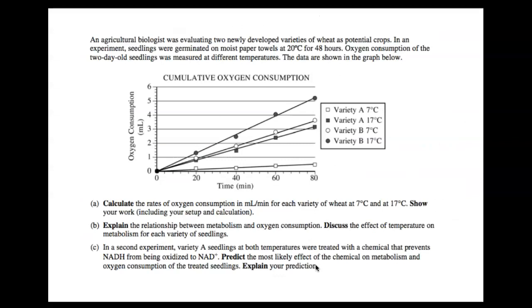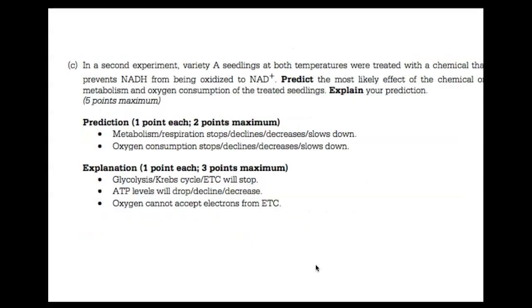And so then Part C—Part C said in the second experiment, variety A was treated with a chemical that prevents NADH from being oxidized to NAD plus. So that means NAD that's picked up a hydrogen and electron is unable to drop off its hydrogen and electron to the electron transport chain. So what is the effect? And the answer is metabolism or respiration decreases, oxygen consumption decreases. And the reason would be glycolysis—or the electron—I'm sorry, the electron transport chain would stop, ATP production would decrease, oxygen can no longer accept electrons from the electron transport chain.